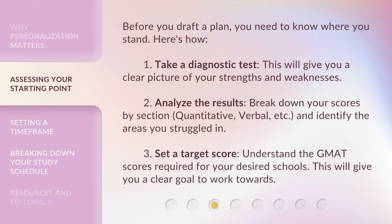Before you draft a plan, you need to know where you stand. Here's how: 1. Take a diagnostic test — this will give you a clear picture of your strengths and weaknesses. 2. Analyze the results — break down your scores by section, quantitative, verbal, etc., and identify the areas you struggled in. 3. Set a target score — understand the GMAT scores required for your desired schools. This will give you a clear goal to work towards.